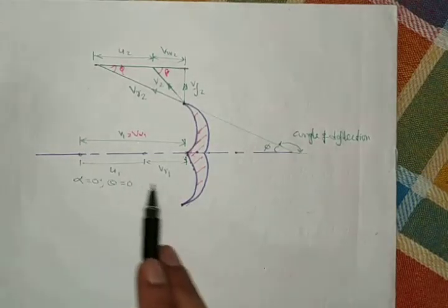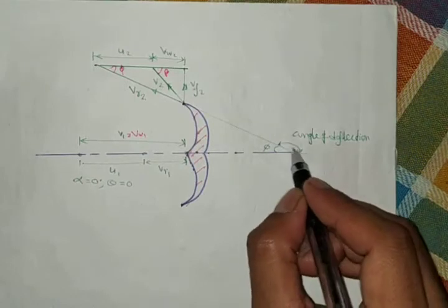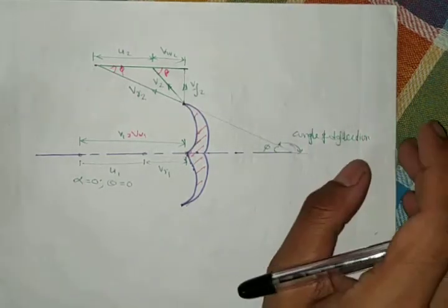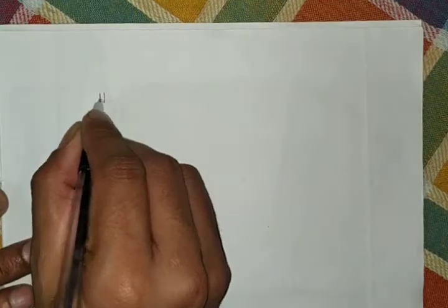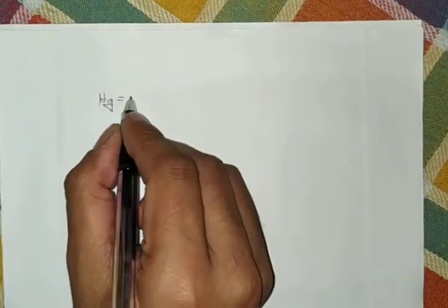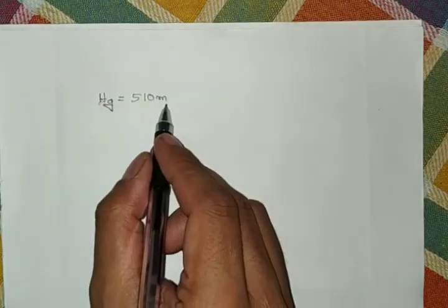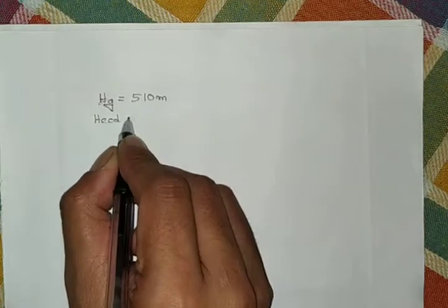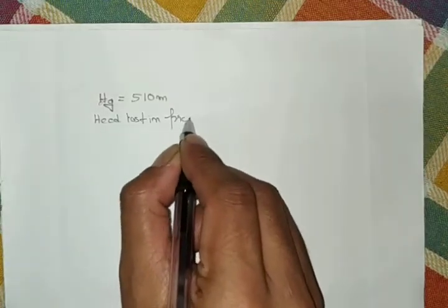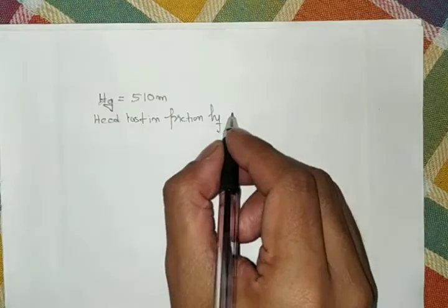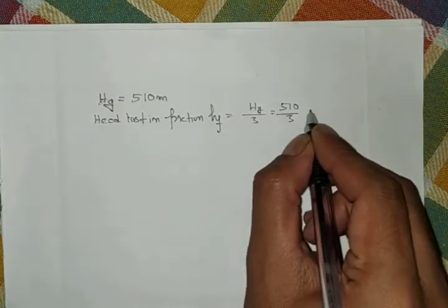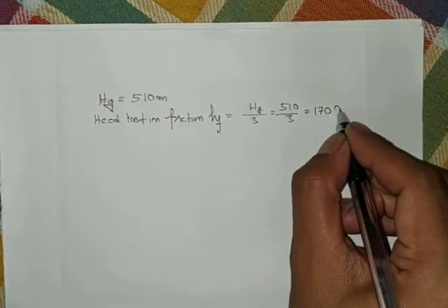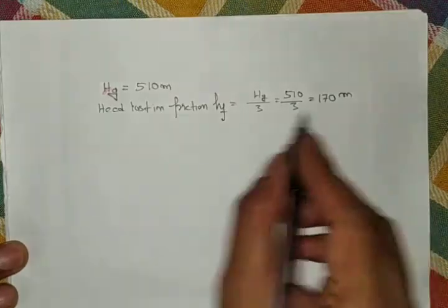For this problem, consider the velocity diagram where the angle of deflection is 165°. From the given data: gross head is 510 m, and head loss in friction HF is one third of the gross head, which is 510/3 = 170 m.